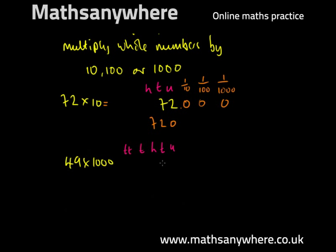So our original number is 49, 4 tens and 9 units. Because the first zero here moves the 4 into the hundreds column, the next zero moves it into the thousands column, and the next zero moves it into the tens of thousands column. So we've got, instead of 4 tens, we've got 4 tens of thousands.